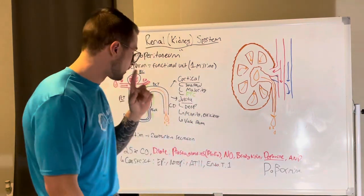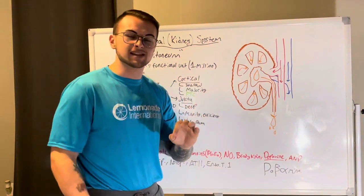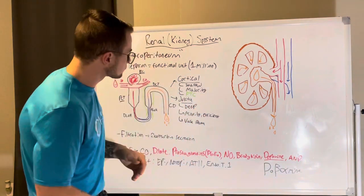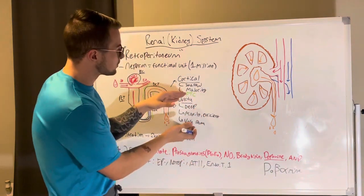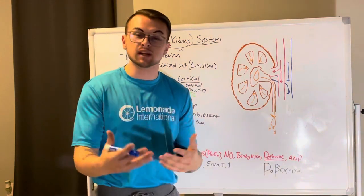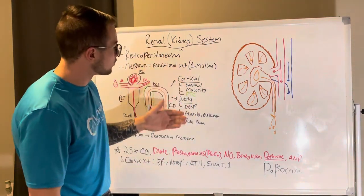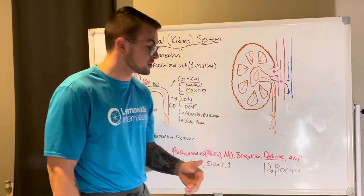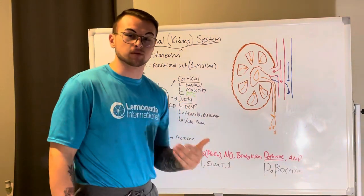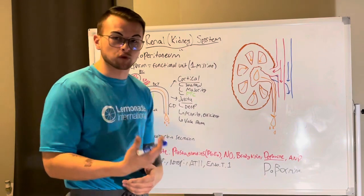The key difference between the two types is that juxtamedullary nephrons have a vasa recta. It performs similar functions to the peritubular capillaries. To remember for an exam: cortical nephrons have peritubular capillaries, and juxtamedullary nephrons have vasa recta — both help reabsorb fluid.